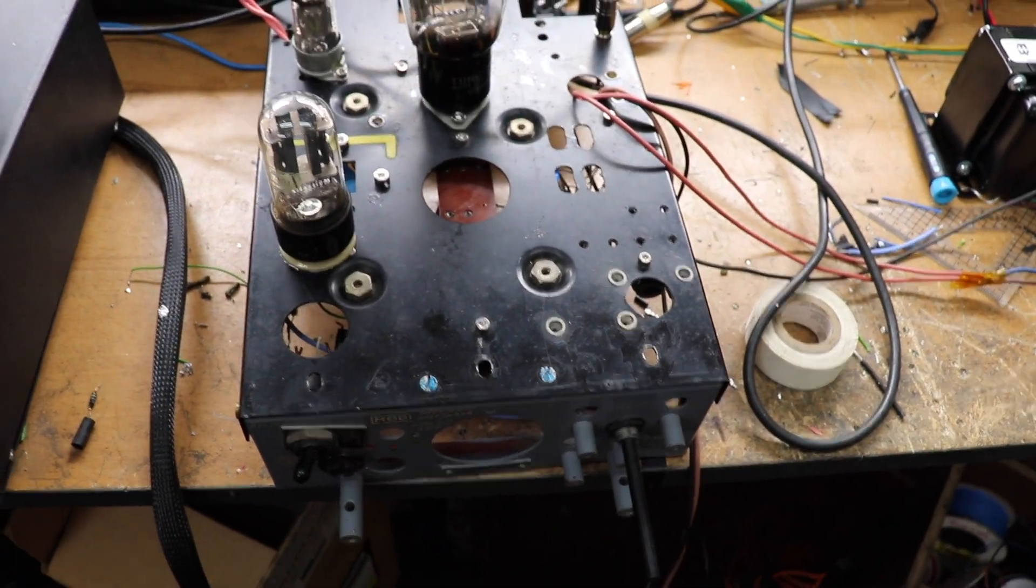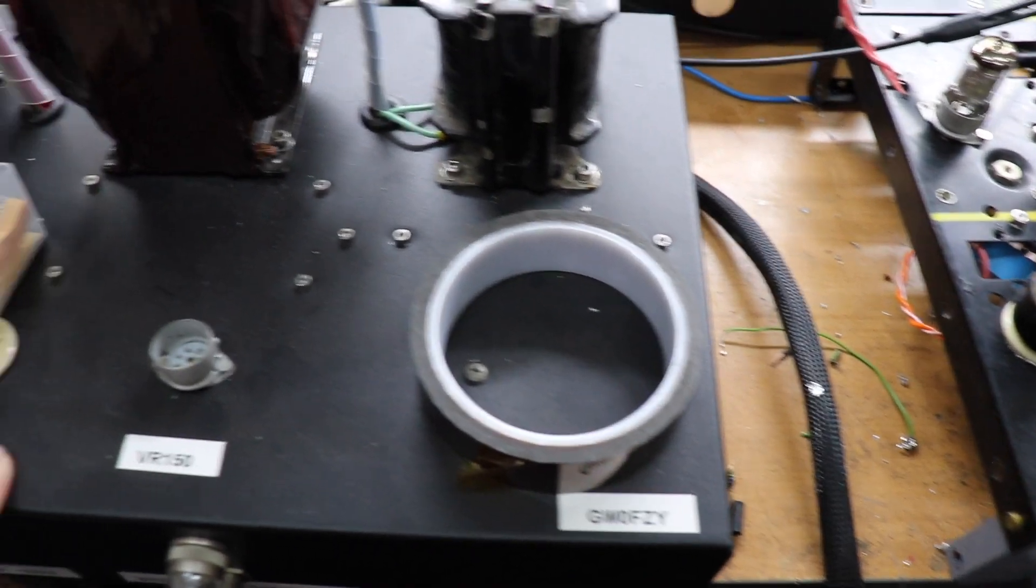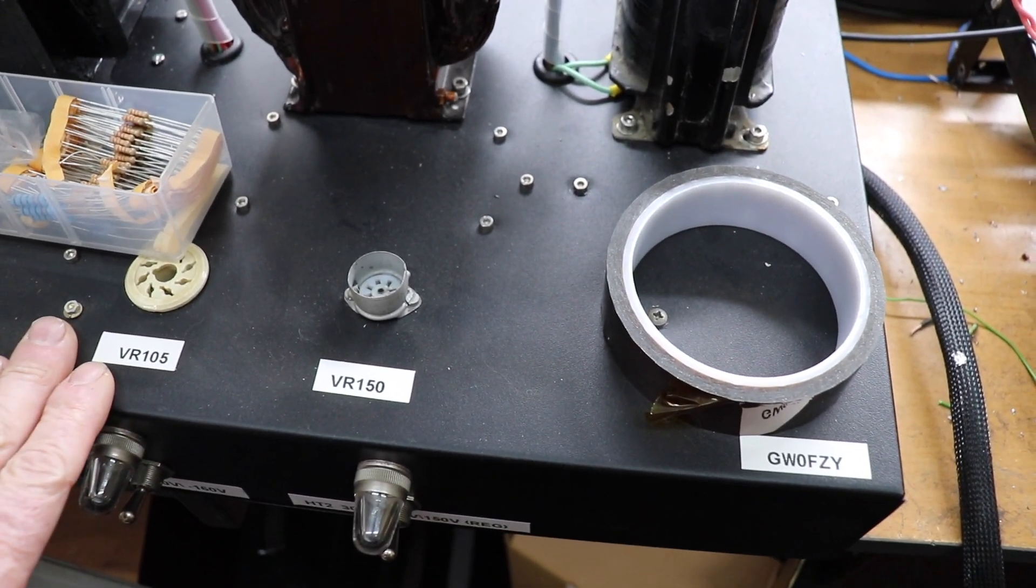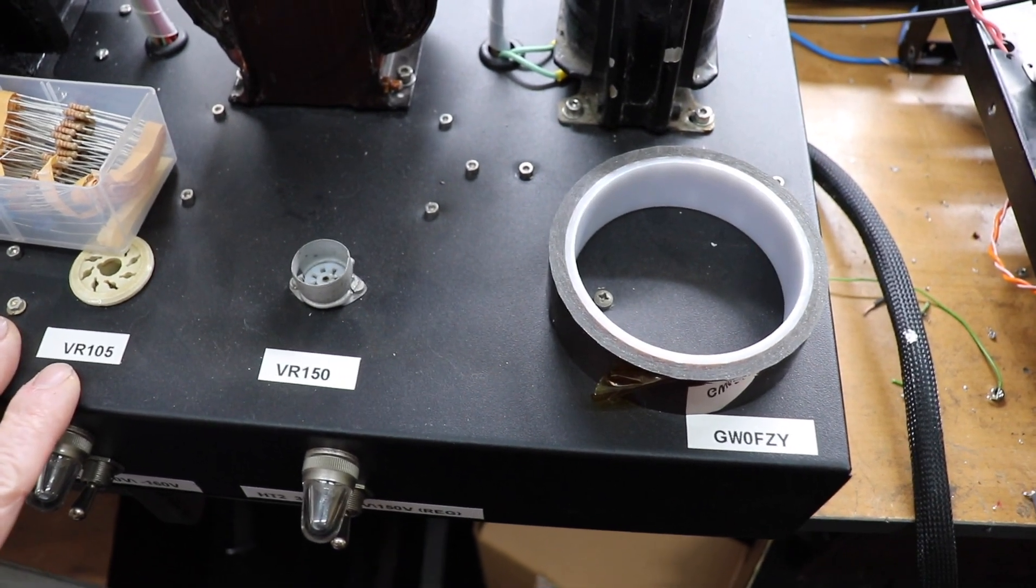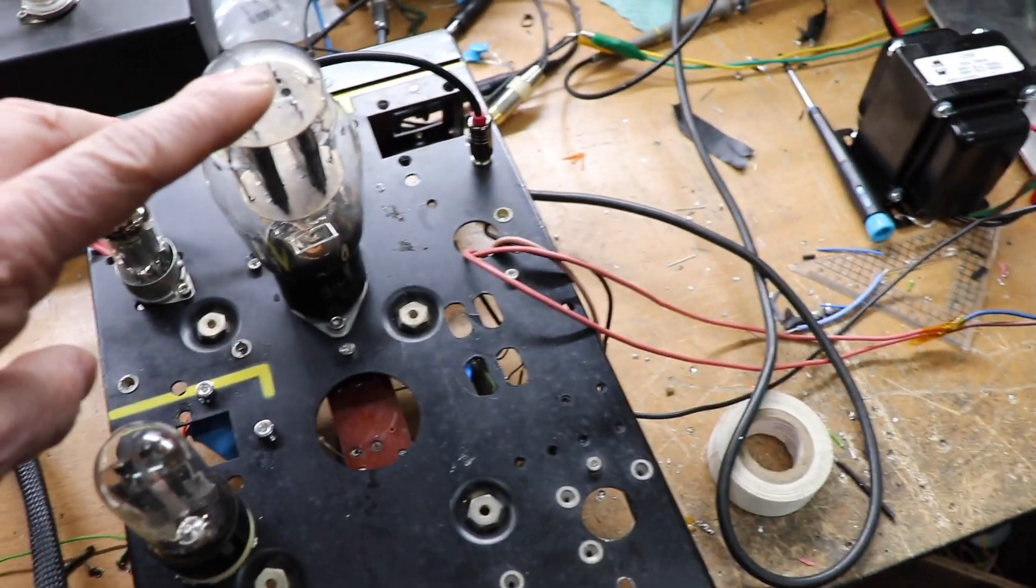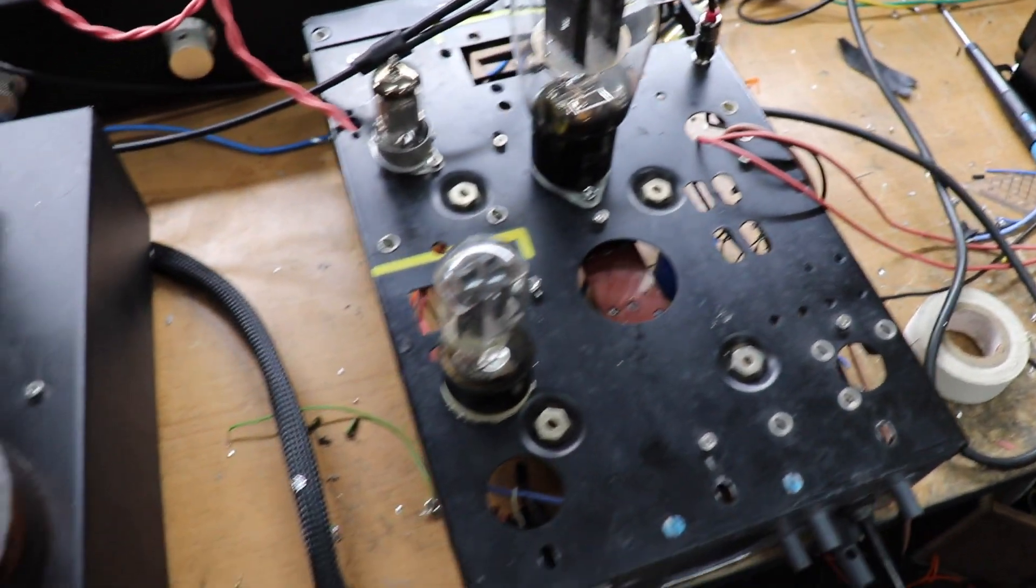And the HT for the preamp comes from this power supply here. This is one I've basically built for a transmitter. So the HT for the preamp is only about 400 volts on that triode and there's some resistors which sort of step the voltage down for the other two stages.